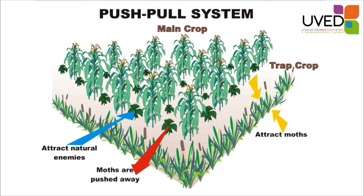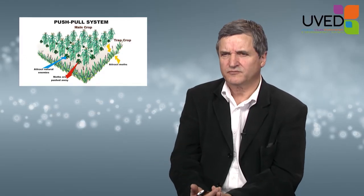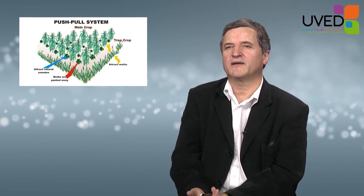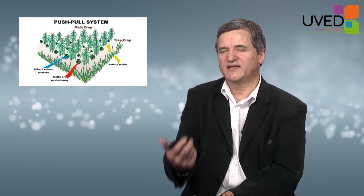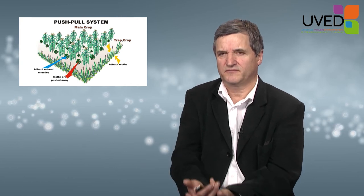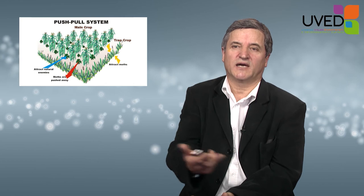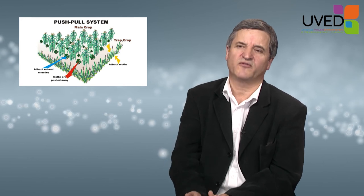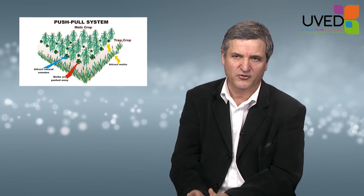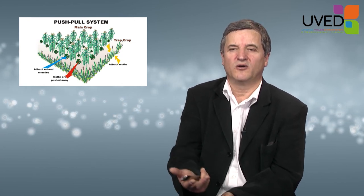This is the pull system, attracting the moth. To reinforce the system, between the stalks of maize, desmodium is planted. Desmodium is a plant that pushes away the female moths, and therefore the moth population looking for a place to lay their eggs is pushed away by this plant — they don't like it. This is a very simple, relatively cheap system to push the parasite out of the plot, attracting it outside the plot to eliminate it with a toxic plant. There are other advantages because the desmodium planted between the maize stalks is a leguminous plant, which provides nitrogen and fertilizes the soil, free of charge.